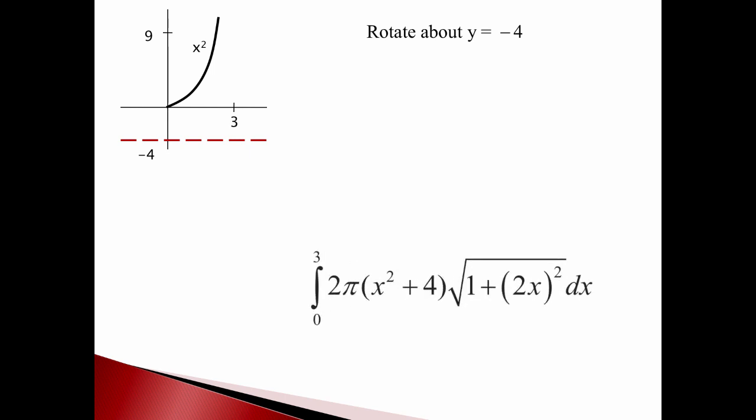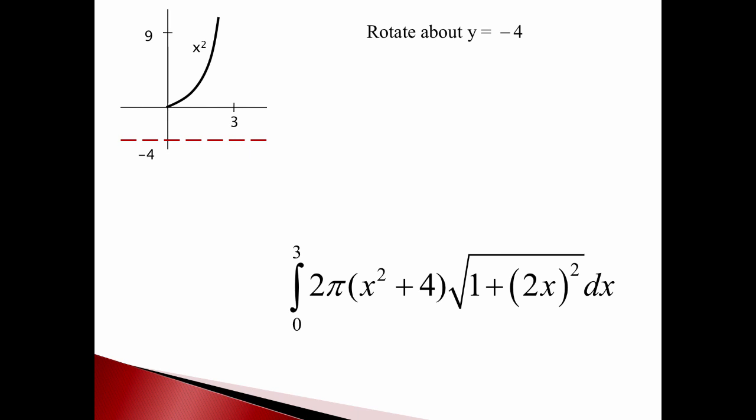All that changes is the circumference. Instead of having 2 pi times x squared, now my radius goes from the x squared, the radius of my peel goes from x squared down to the axis.